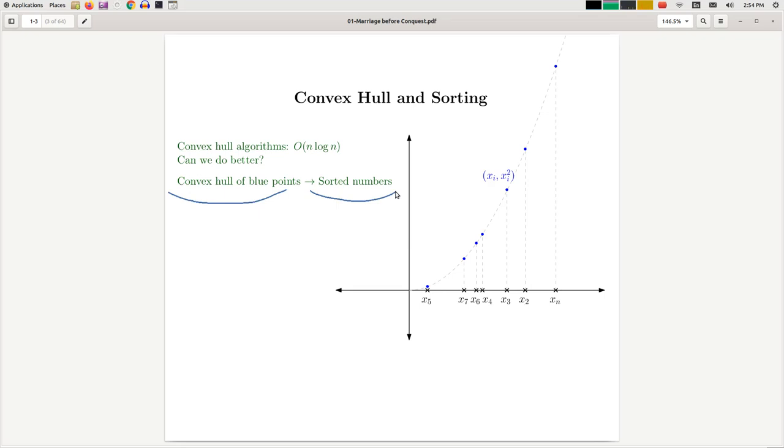This shows that convex hull is at least as hard as sorting. And since for sorting we have an n log n lower bound, therefore a lower bound for the convex hull follows.